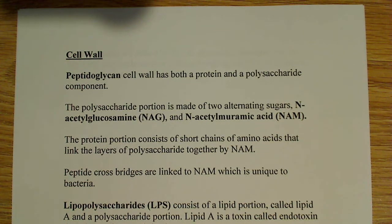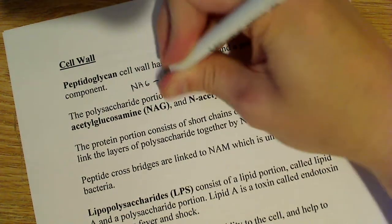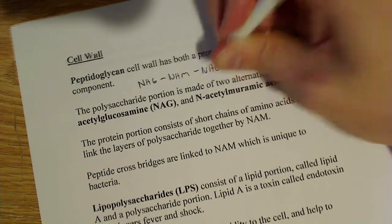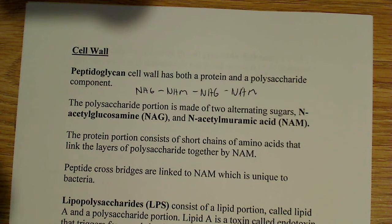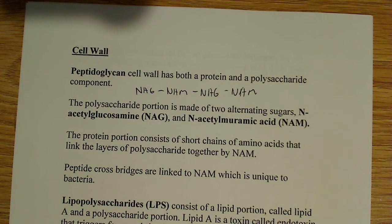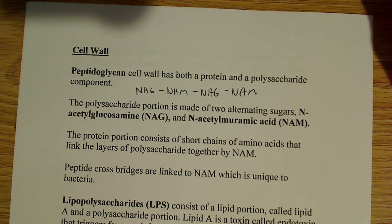That glycan chain has alternating NAG and NAM subunits or monomers — they're sugars. So we have NAG, NAM, NAG, NAM alternating in a chain, and they're held together by beta-1,3 glycosidic linkages. If you think about starch or glycogen, those are generally alpha-1,4 glycosidic linkages, so these are different. NAG stands for N-acetylglucosamine, and NAM stands for N-acetylmuramic acid. NAG and NAM are fine for our purposes.